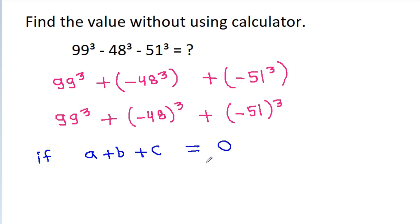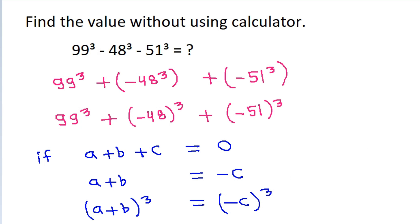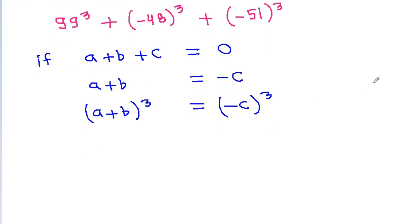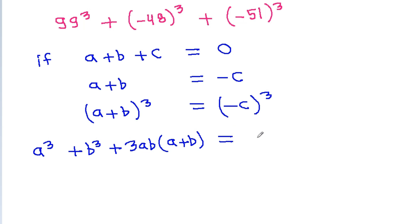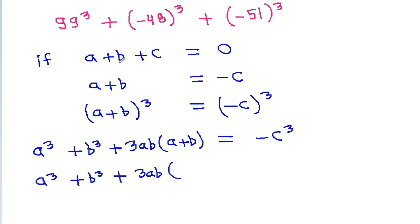If we are given that a plus b plus c is equal to 0, then a plus b will be equal to minus c, and a plus b whole cube will be equal to minus c whole cube. And a plus b whole cube is a cube plus b cube plus 3ab times a plus b, and minus c whole cube will be minus c cube. So it is a cube plus b cube plus 3ab times minus c.